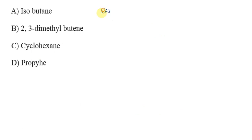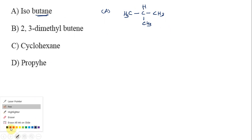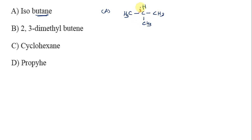Option A is isobutane. Let's look at the structure. This is isobutane — iso means it has two branches on one carbon. If you look at this compound, this carbon has one, one, one R group attached. This is a primary carbon. There is one moving hydrogen, so this is option A.